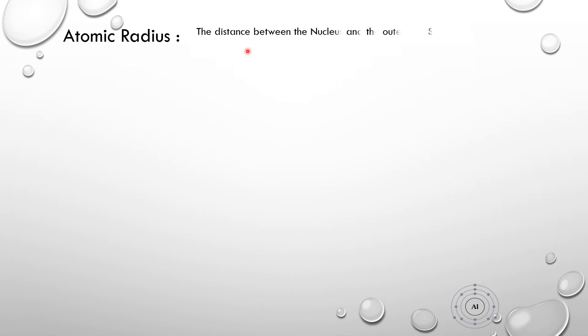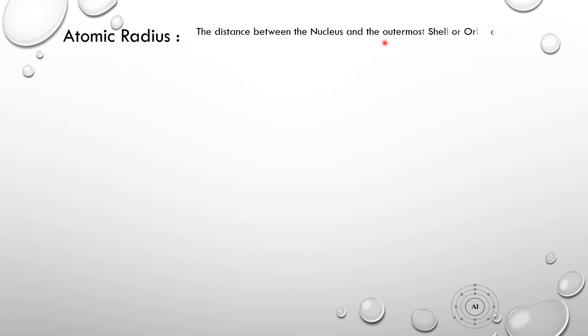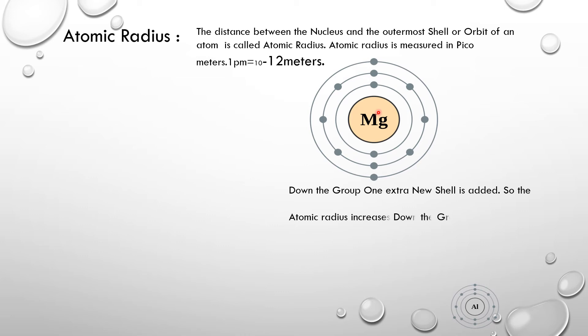Let us discuss the second property: atomic radius. What do we mean by atomic radius? The distance between the nucleus and the outermost shell or orbit of an atom is called the atomic radius. Atomic radius is measured in picometers, where one picometer equals 10 to the power of minus 12 meters. The distance between the center of the nucleus and the outermost shell is the atomic radius.